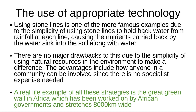Lastly, the use of appropriate technology is one of the most innovative strategies. A good and famous example involves using stone lines to make sure that water is held back, with each line causing the nutrients that the water is carrying to be held back as well. There are no major drawbacks to this due to the simplicity, and the advantages include how the community is involved since there is no expertise required and how the method is free to do.